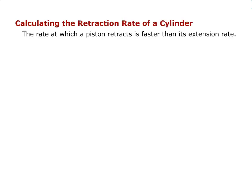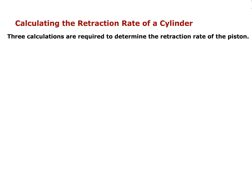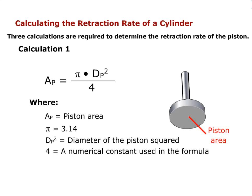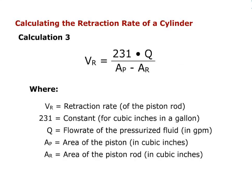The rate at which the piston retracts is faster than its extension rate. The reason for the difference is that there is less volume inside the cylinder on the side of the piston that has the rod. Three calculations are required to determine the retraction rate of the piston. Piston area equals pi times the diameter of the piston squared divided by 4. Area of the rod equals pi times the diameter of the rod squared divided by 4. Velocity, or retraction rate, of the piston rod equals 231 times the flow rate divided by the difference of the piston and rod areas.